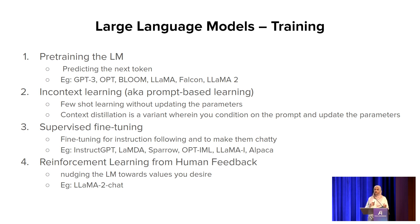There's also something in the middle that actually updates the parameters and uses the context, called context distillation, which Anthropic put out as research. The third type is supervised fine-tuning, where you give the model examples of input prompts and expected outputs, and fine-tune the model for instruction following to make it chatty and helpful. Examples of supervised fine-tuned models are InstructGPT, LaMDA, OPT, LLaMA-1, and LLaMA 2 Chat.